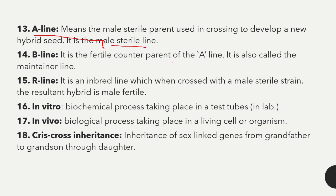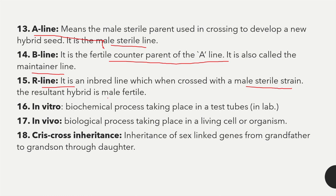B line is a fertile counterpart of the A line, also called the maintainer line. R line is an inbred line which, when crossed with a male sterile strain, produces a male fertile hybrid — this is called the restorer line.